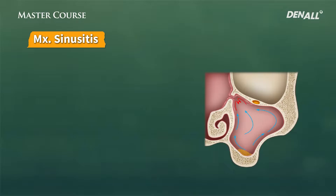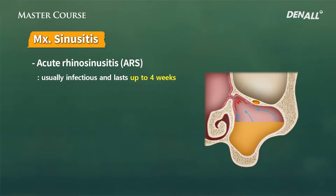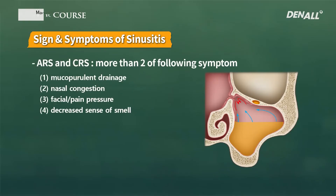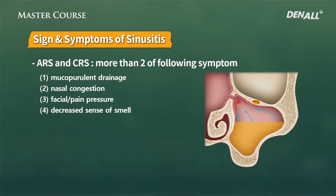Sinusitis can be divided into two categories. First is acute rhinosinusitis (ARS), which occurs within four weeks of surgery. Chronic rhinosinusitis is where it lasts for over eight weeks. If there are more than two symptoms, you can suspect sinusitis. Symptoms include nasal congestion, odor coming out from the nose, separation from the nose or passing through the throat, pain in the sinus area or headache, and decreased sense of smell.